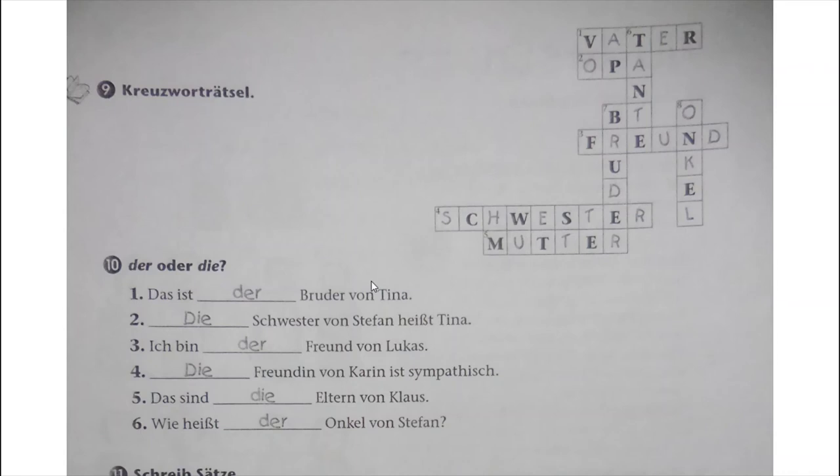Then Nummer 7: Der oder die. We use 'der' for masculine, 'die' is for feminine and also for plural. Das ist der Bruder von Tina - masculine, so 'der'. Die Schwester von Stefan heißt Tina - feminine, so 'die'. Ich bin der Freund von Lukas - masculine, so 'der'. Die Freundin von Karin ist sympathisch - feminine.